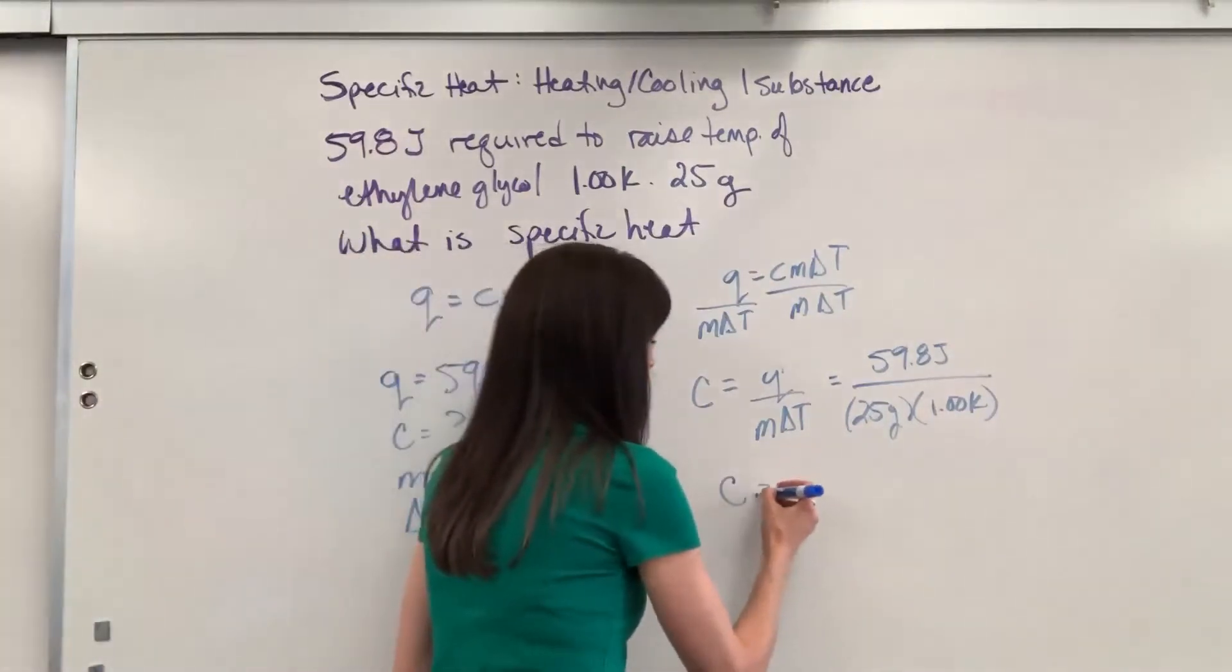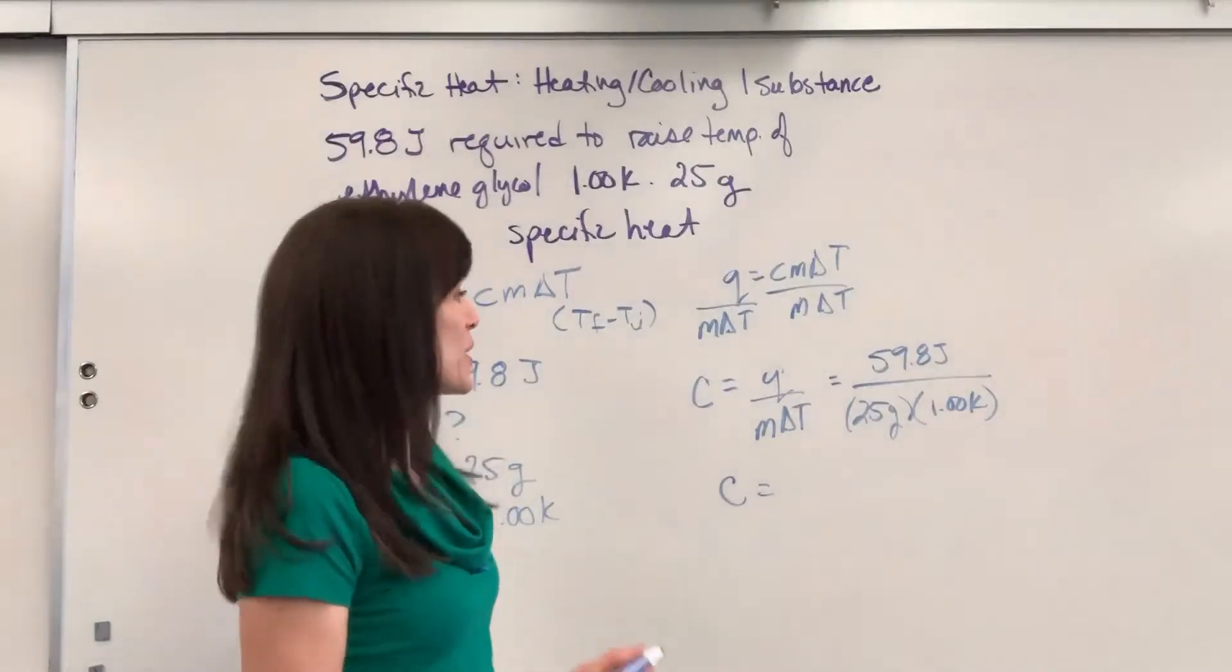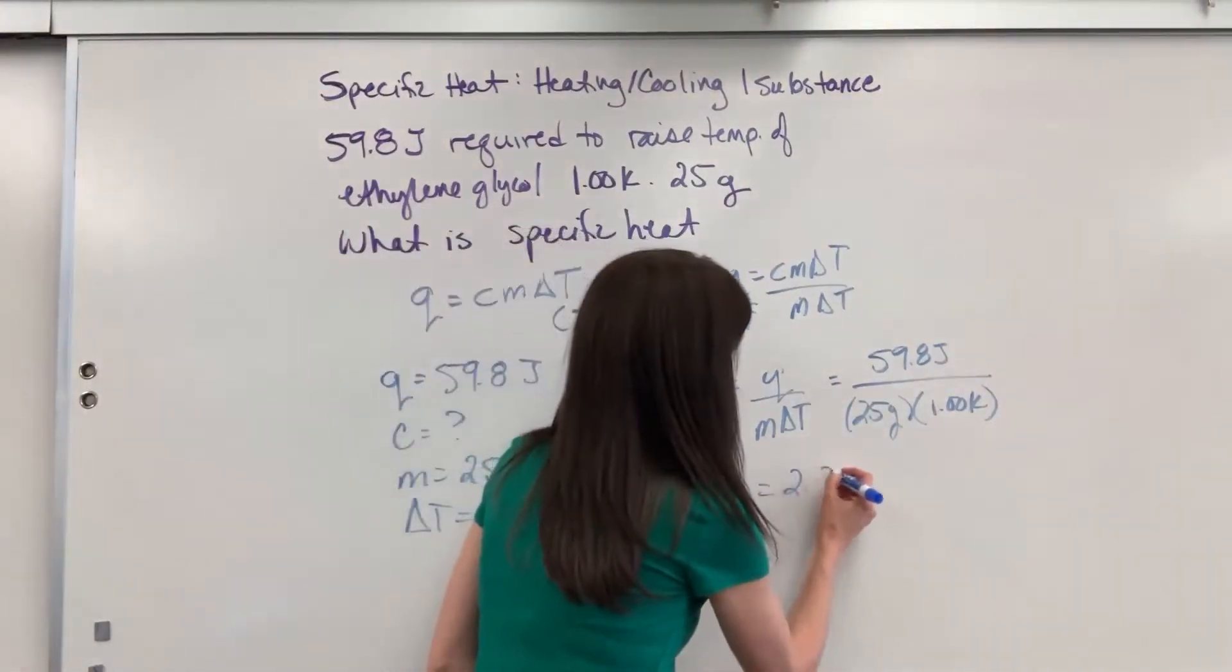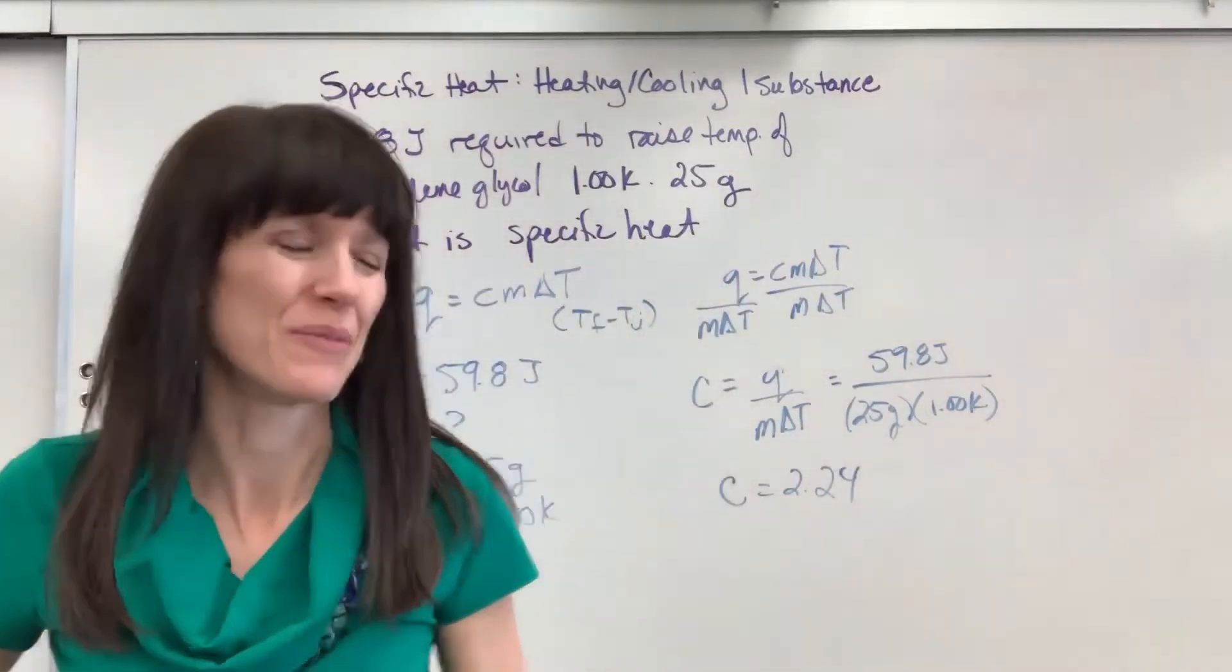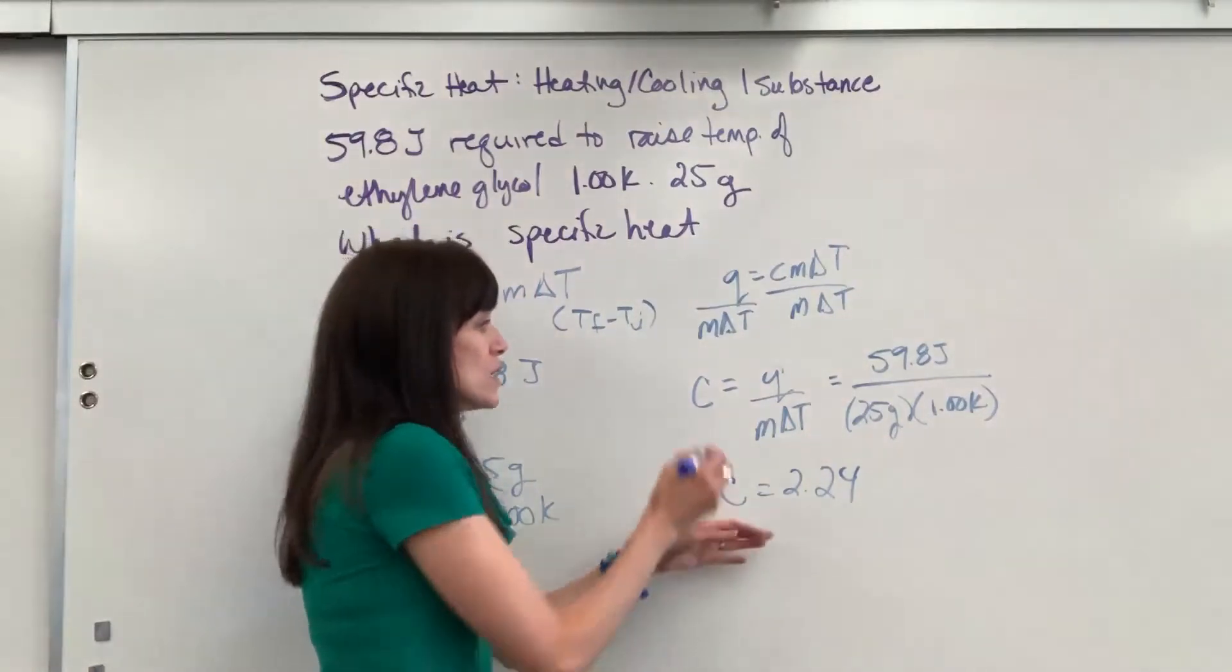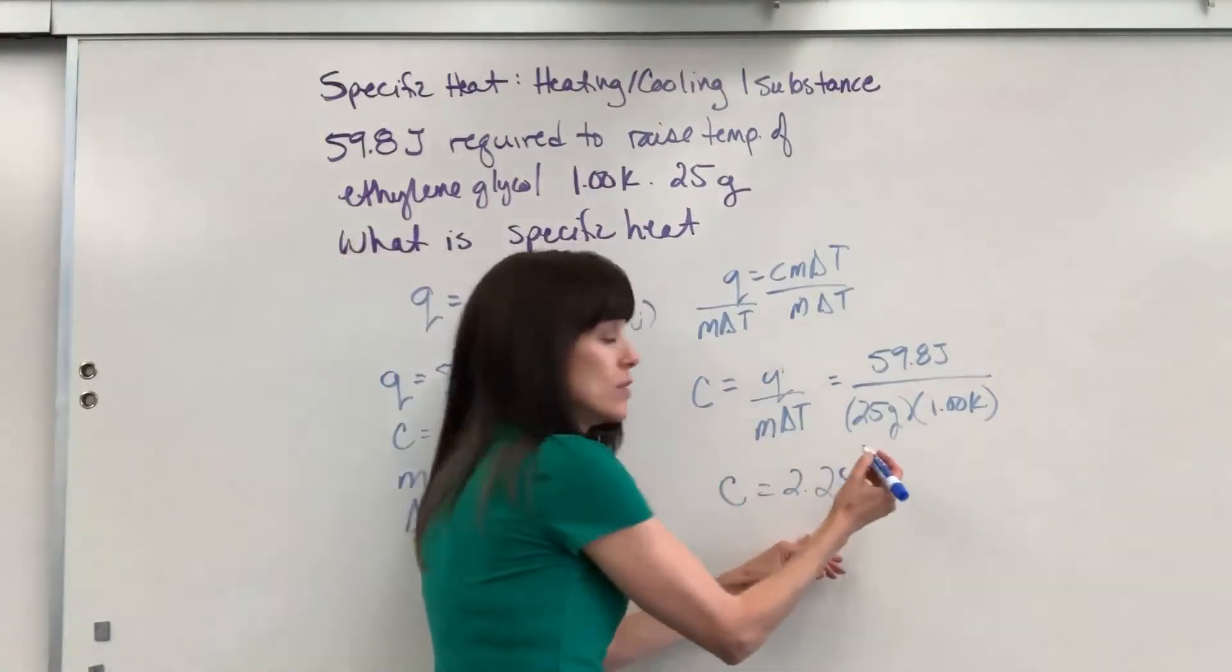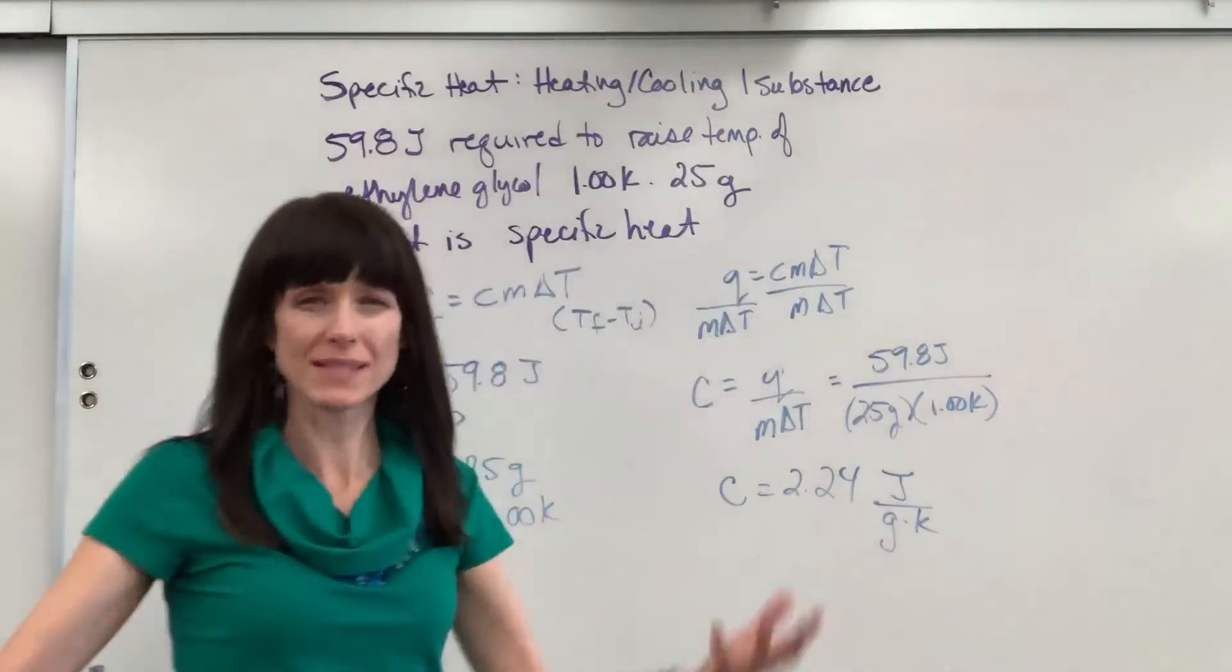So our specific heat is going to equal, oh, and we'd have to divide this, it's going to be what, 2.24, something like that. I'm doing it really fast. Check it in your calculator. I'm just doing that in my head. So we divide that, and again, the unit, joule divided by gram times kelvin.